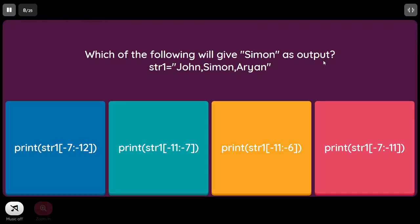Which of the following will give 'Simon' as output? The string is 'john,Simon,rn' and comma is also counted as a character. The options represent negative indexes. Counting in reverse: -1 is 'n', -2 is 'a', -3 is 'y', -4 is 'r', -5 is 'a', -6 is comma, -7 is 'n' (start of Simon), and capital 'S' is at -11. We need the slice to include index -7 up to (but not including) the comma at -6, so the end is -6. Option C is correct.